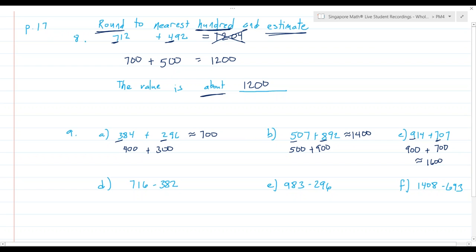Estimation is good when you don't have to have exactly the number. You just want to know around how much is it. And we actually do that a lot in the real world. When we're doing math problems, we usually want an exact number. But if you're going to feed people and you need to know how many mashed potatoes to make, you just need to know about how many people you're going to feed.